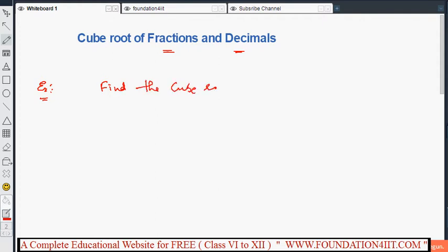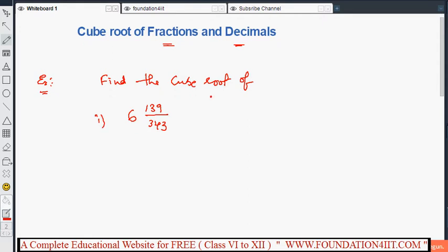Find the cube root of 6 139/343. This is a mixed fraction. This mixed fraction you have to convert into improper fraction first, then you'll try to find out the cube root. We need to find out the cube root of this.